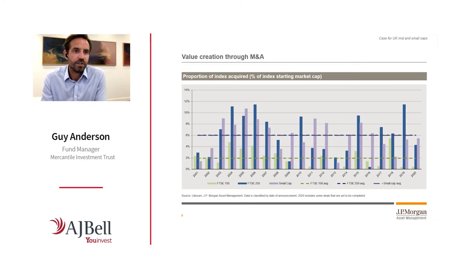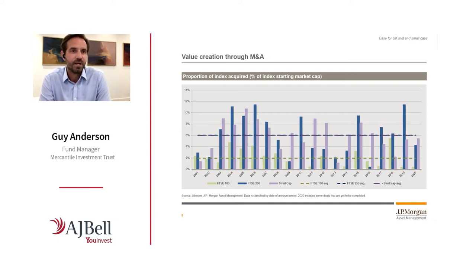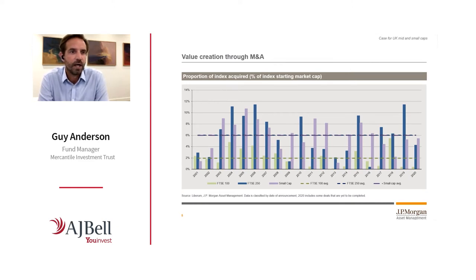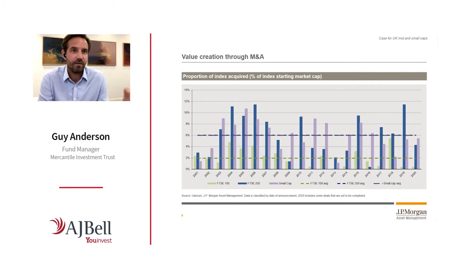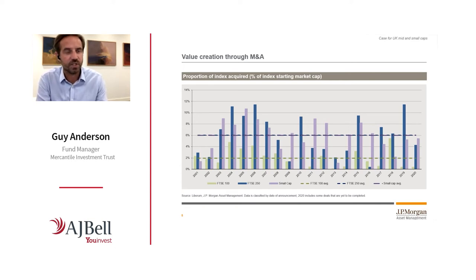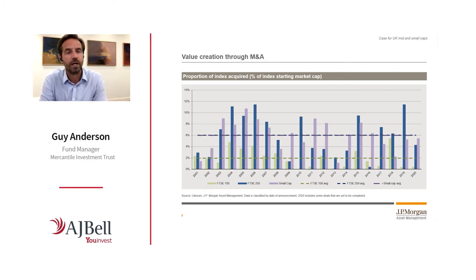This chart shows the percentage of each component of the UK market that has been acquired in each year through this century, where the blue and purple bars show the percentage of the mid and small cap markets acquired versus the green bars for the FTSE 100. It has averaged about 6% for mid and small caps each year versus about 2% for large caps. With an average takeover premium of about 30%, if you're buying the mid or small cap markets, you get that 30% premium on an additional four percentage points of your market, which equates to 1.2% of additional performance per annum — not immaterial when we think about how that compounds over time.